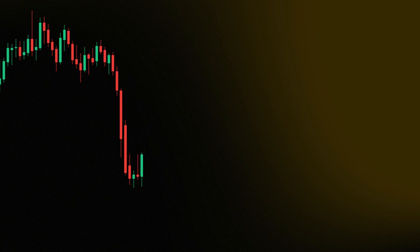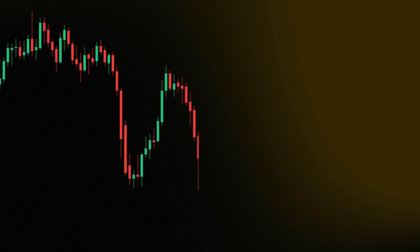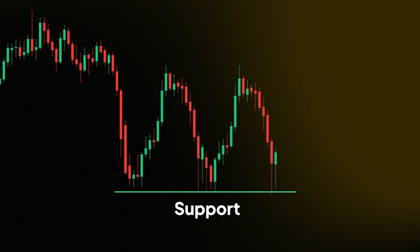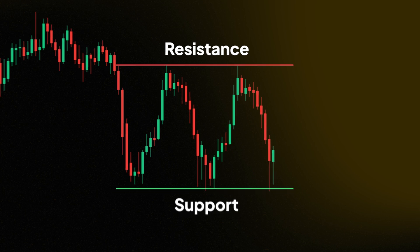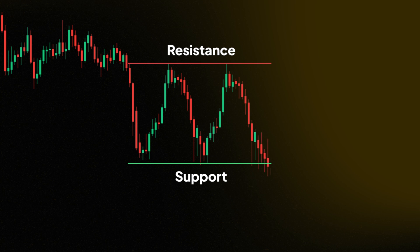Support and resistance levels are key price levels where the market has historically shown a tendency to reverse. Support is the point where the price is less likely to drop due to previous demand in that area. Resistance is the point where the price is less likely to break above. While this may seem simple for new traders, you need to remember that big market players can use this knowledge against you.